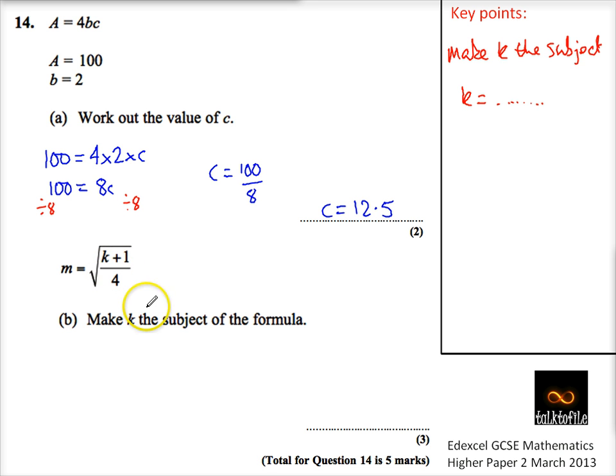You can see that all of this is square rooted, so the first thing I want to do is square everything to undo it. So that tells me that m² is k+1 over 4.